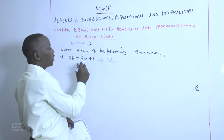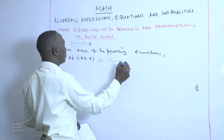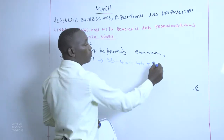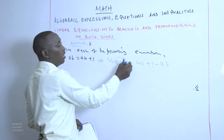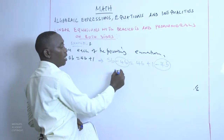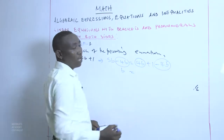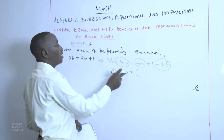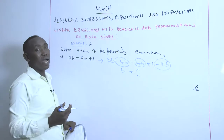So for 5B minus 4B equals 4B plus 1: we eliminate 4B from both sides. We subtract 4B on both sides of the equation. 5B less 4B gives us B equals 2; 4B subtract 4B gives us 0, so we remain with 1. Therefore, the value of B in this equation is 1.